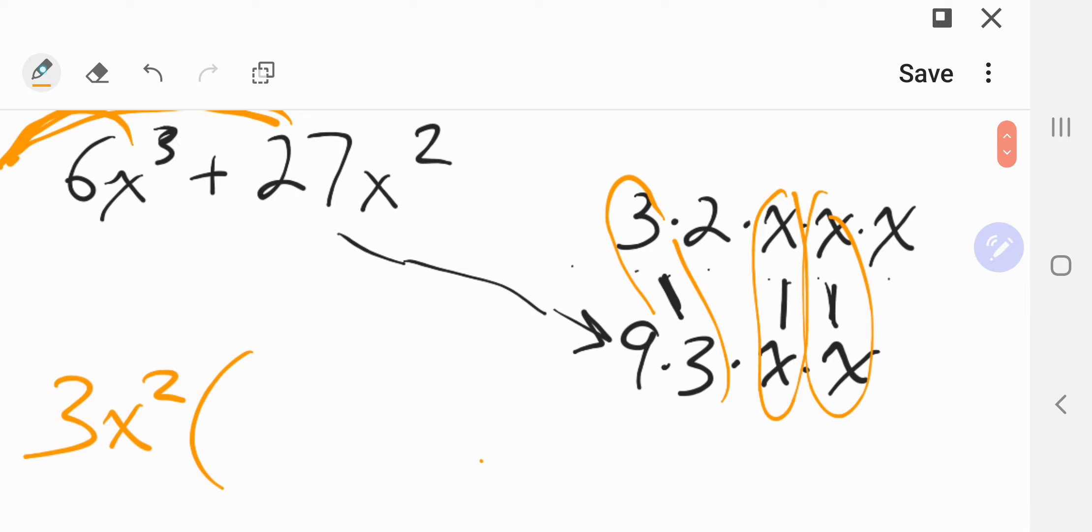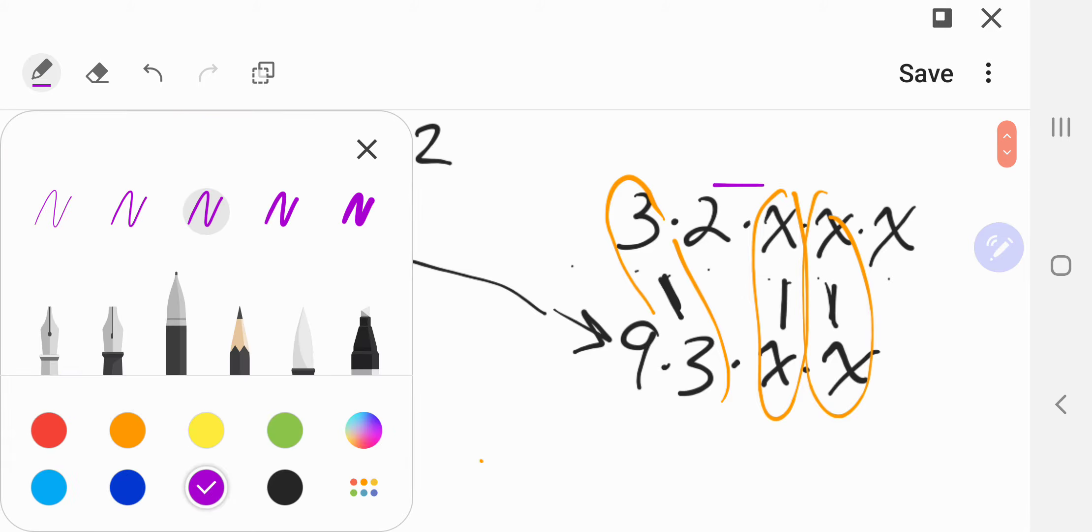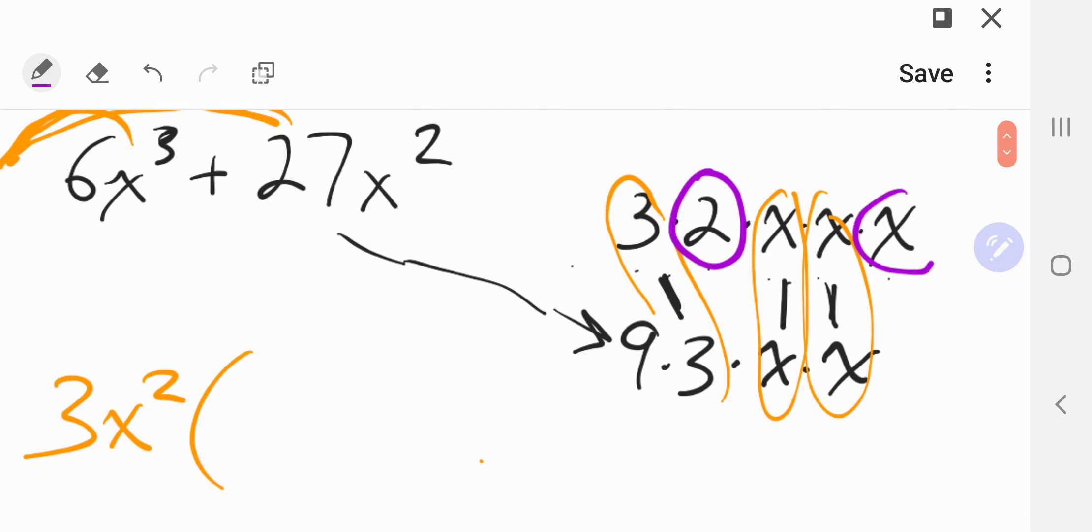Now we ask ourselves, what is left? Well, what's left is this 2 and this x that's left in the 6x cubed. We pulled everything out. 2x is all that's left.